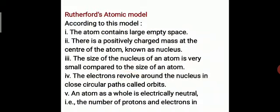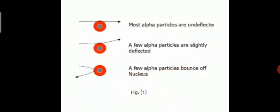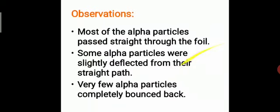Third point: the size of the nucleus of an atom is very small compared to the overall size of the atom, which is why it is present at the center. Fourth point: the electrons revolve around the nucleus in a circular path called orbits. This was concluded because a few alpha particles were slightly deflected — when the ray passed near a moving electron it got deflected, and when away from electrons it came out straight.